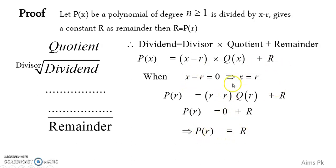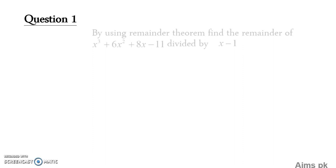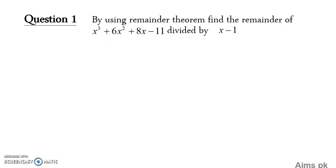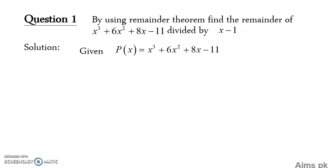Now let's see how to apply the Remainder Theorem to a question. I have taken question number 1 from exercise 5.6: by using the Remainder Theorem, find the remainder of the polynomial divided by (x minus 1). A cubic polynomial is given. Rewrite the question and name it P(x), since it is a polynomial.